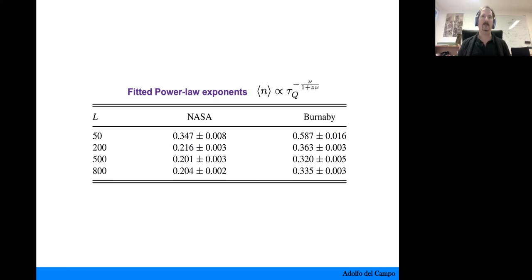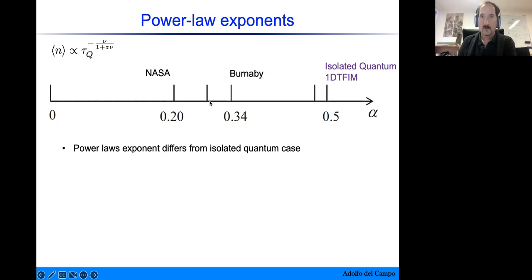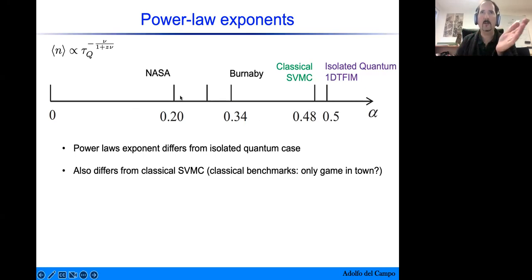What explains this power-law behavior? The machines are clearly not consistent with the isolated transverse field Ising model, where we expect an exponent of one-half. We consider as a candidate a classical model of planar rotors evolving under Monte Carlo updates — the so-called spin vector Monte Carlo model — but its scaling is also very different from what is seen in the machines.